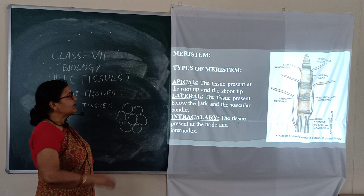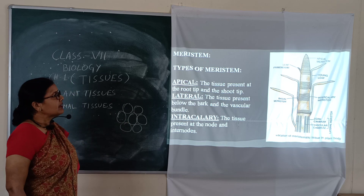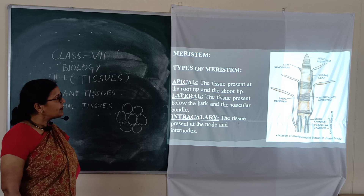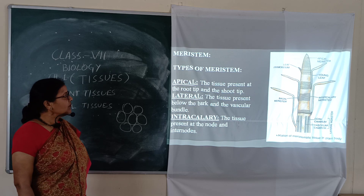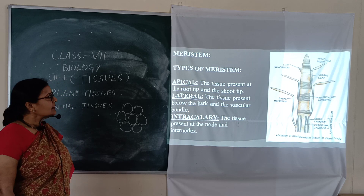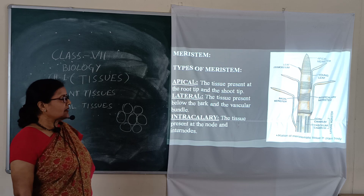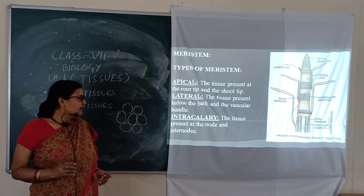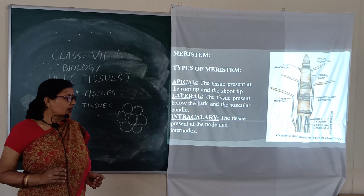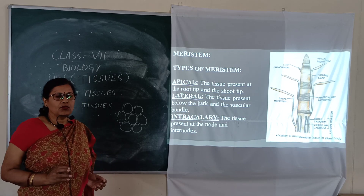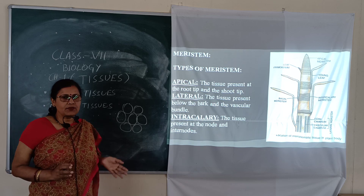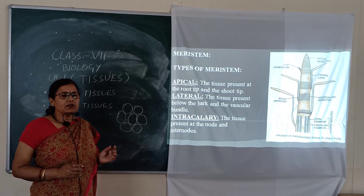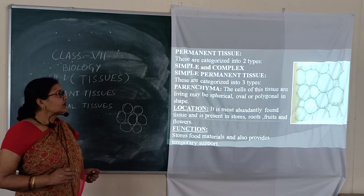There are three types of meristem. Apical meristem is at the top level, at the shoot tip or root tip. The second is lateral meristem, present below the bark — bark meaning the outer covering of the trunk. The third is intercalary meristem, present at the node and internode. Node means the starting point of the leaf, and internode is the distance between two nodes.